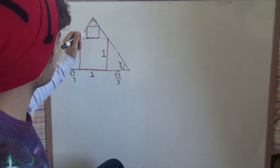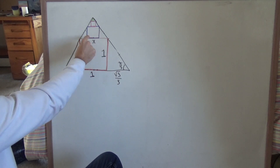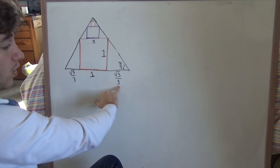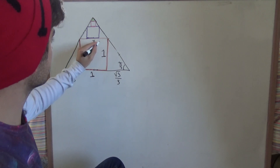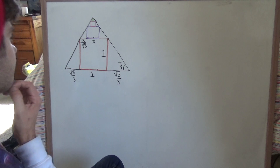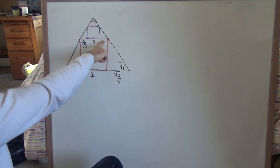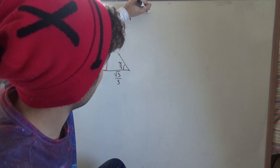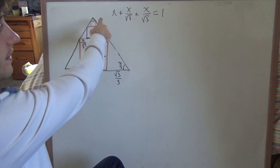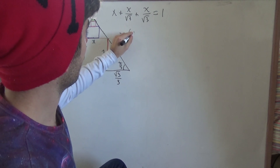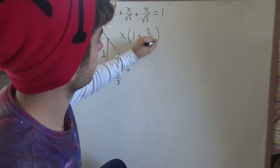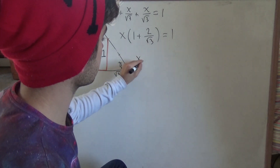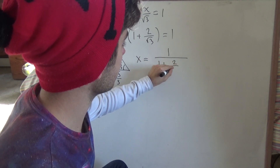We need to recognize that we're adding up the areas of the squares, and we need to find this length here — because this is 1 — so whatever we multiply by to scale from one square to the next is just this number. We can call this number x. Since everything is scaling down the same way, this length must be x/√3, just like this length over here is 1/√3. So we have x + x/√3 + x/√3 = 1. Factoring out x: 1 = x(1 + 2/√3). Solving for x: x = 1/(1 + 2/√3).